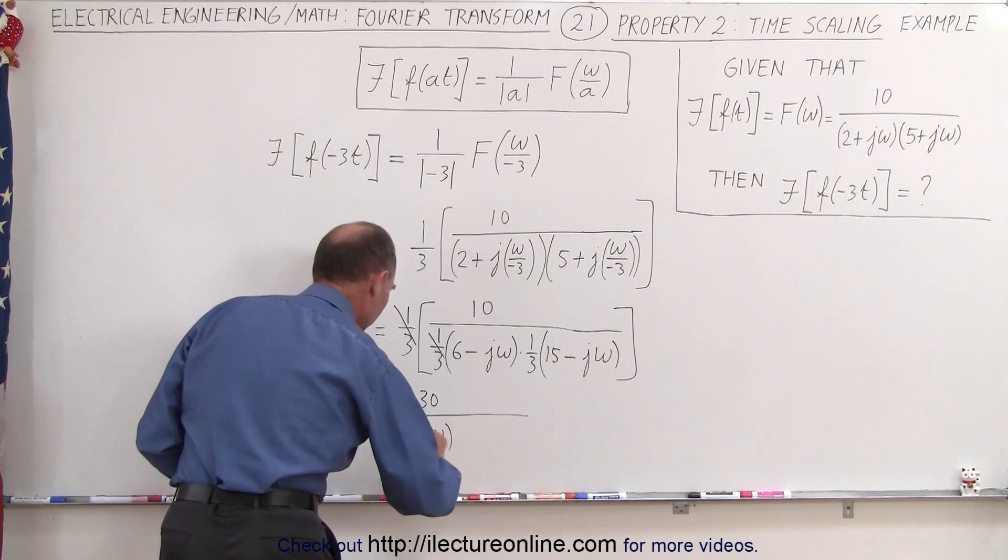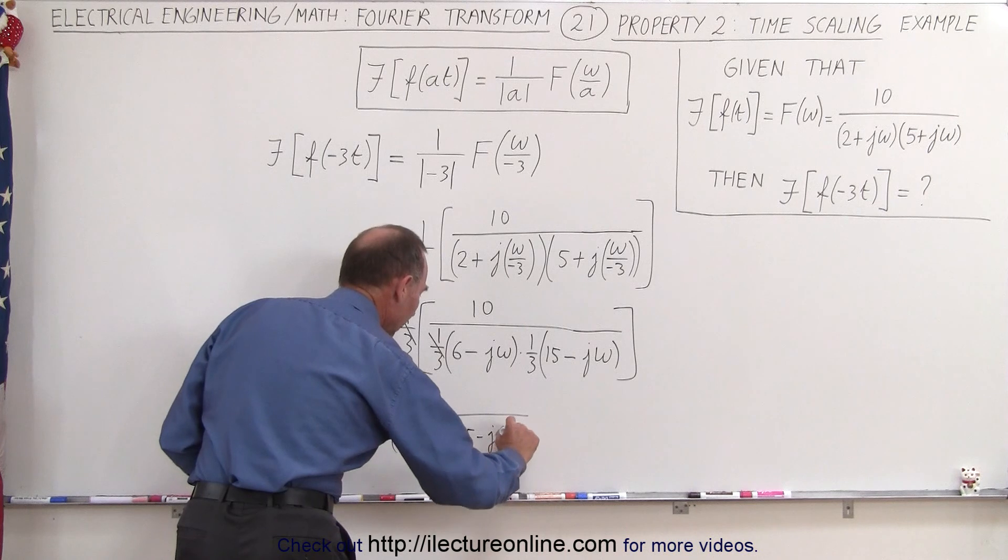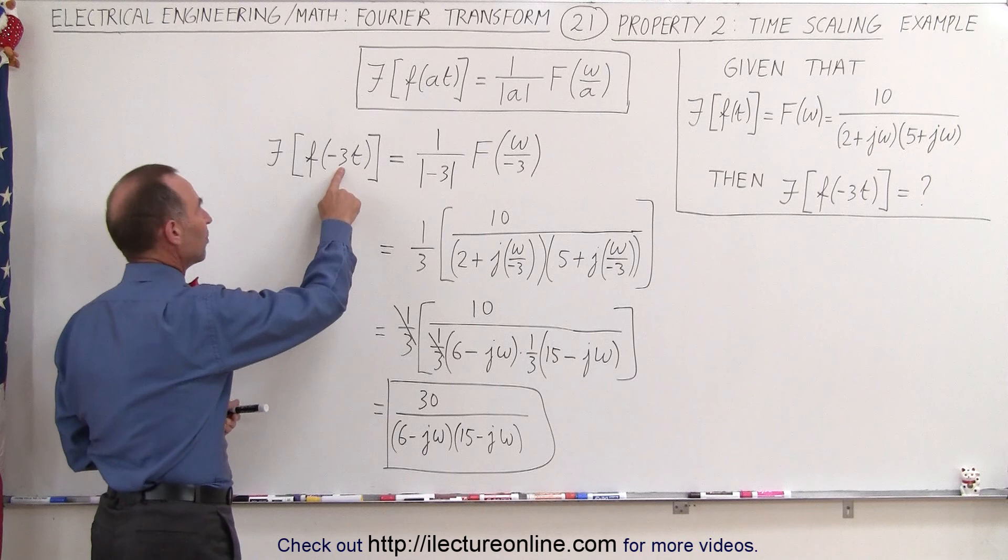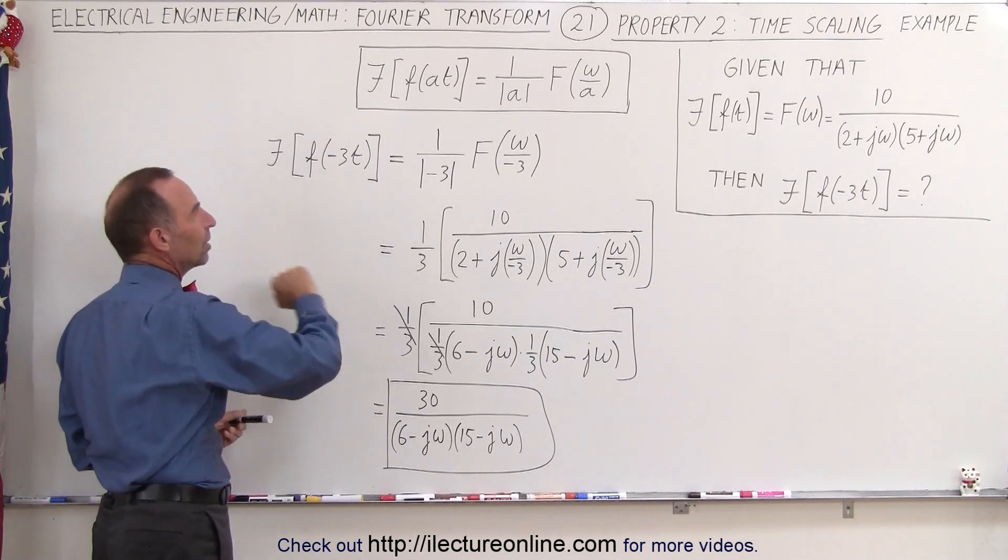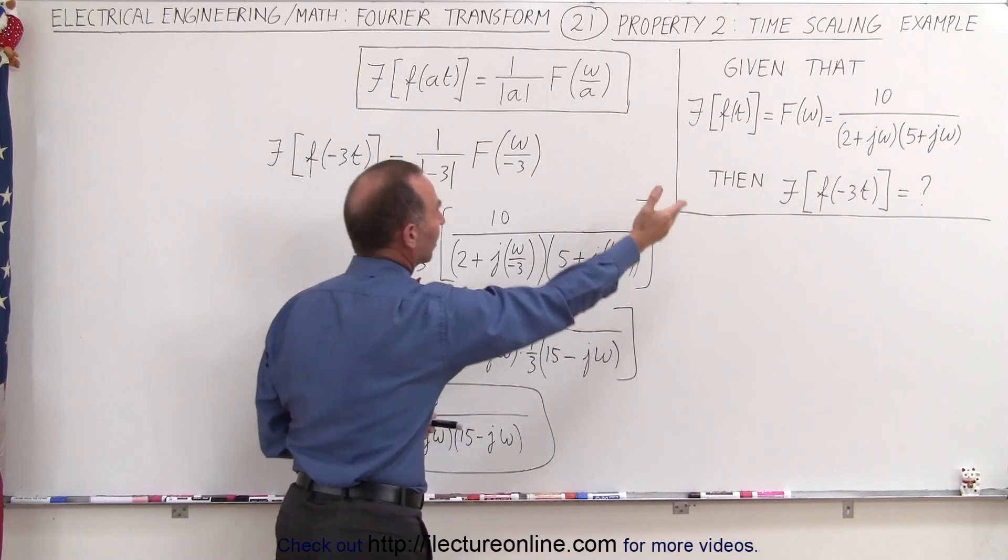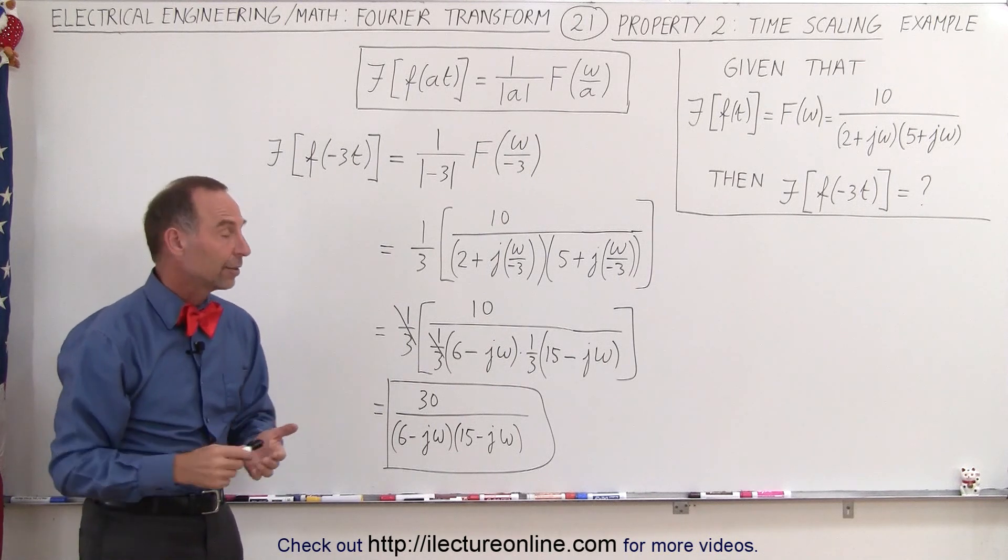And this then would be the new Fourier transform of this input function where instead of having f of t it becomes f of minus 3t. So we take the result of the first Fourier transform and simply transfer it into a different form without having to recalculate the Fourier transform.